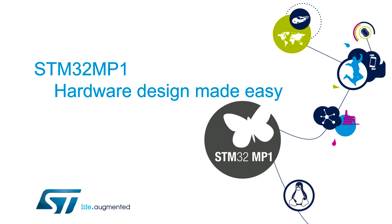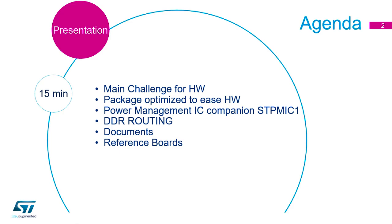We've now been through most of the software, played around with it, understood the peripherals and all the embedded software. Now we're going to have a look at the hardware — the physical side of things. The hardware design with all the bits and pieces has been made easy for you. We're going to look at the main challenges for hardware, the different packages to ease your hardware design, the power management IC, DDR routing, and all the other documents, reference boards, and extra files to help you design and test your hardware.